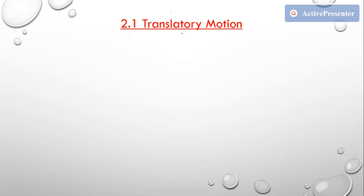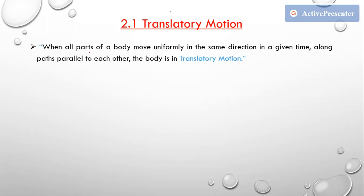What is translatory motion? When all parts of a body move uniformly in the same direction in a given time, along paths parallel to each other, then we can say that body is in translatory motion. The two key things to remember are: uniform movement in the same direction, and the parts of the body moving along paths parallel to each other.